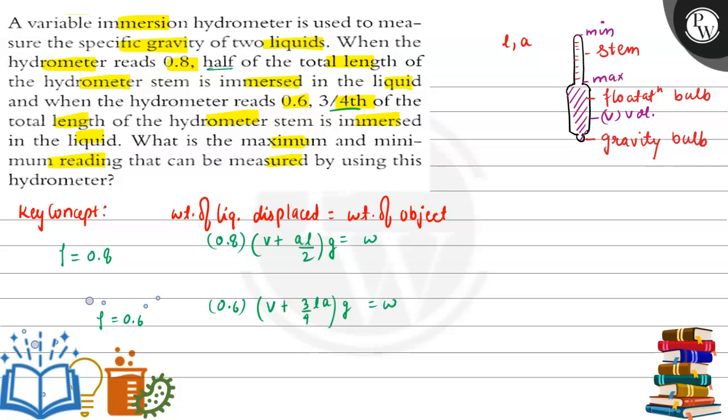We will equate in this case: 0.8 multiplied by V plus AL by 2 gravity, this gets cancelled out. This will be equal to 0.6 multiplied by V plus 3AL by 4. On solving this, we will get relation between volume and area of cross-section and length. Volume will be equal to AL by 4.